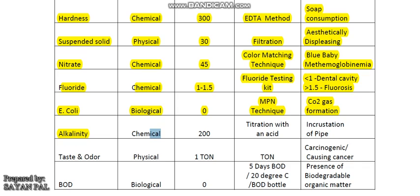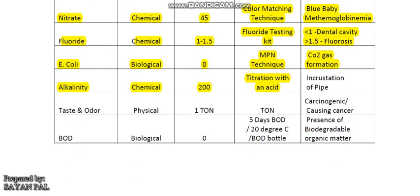Then, alkalinity is a chemical water quality parameter. Alkalinity means the ability of water to neutralize H⁺ ions. It is measured by titration with an acid, generally 0.02 normal H₂SO₄. Its acceptable limit is 200 mg per litre and its cause-for-rejection limit is 600 mg per litre. It causes incrustation of pipe: CO₃²⁻ reacting with Ca²⁺ causes CaCO₃, and its precipitate in the pipe causes incrustation.